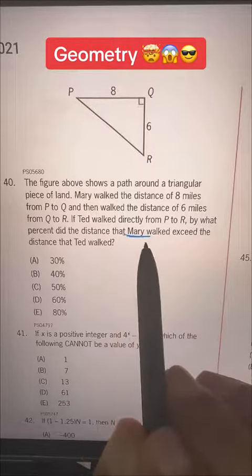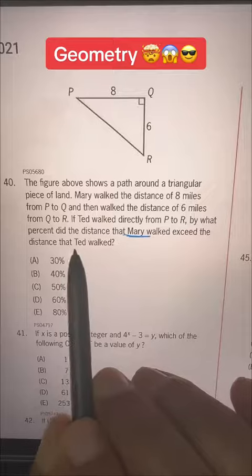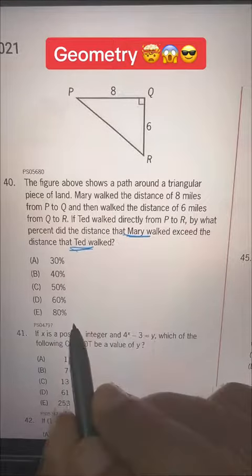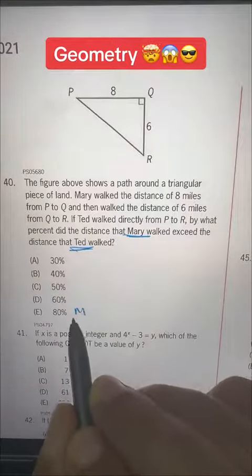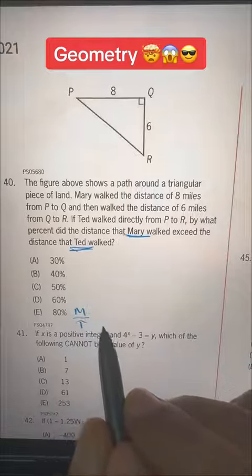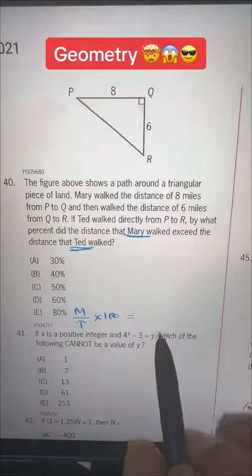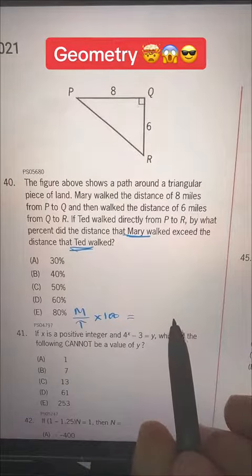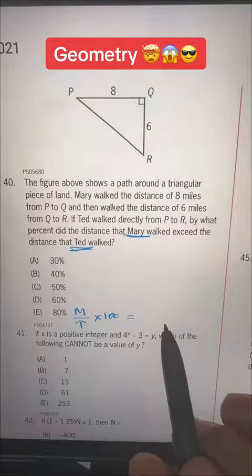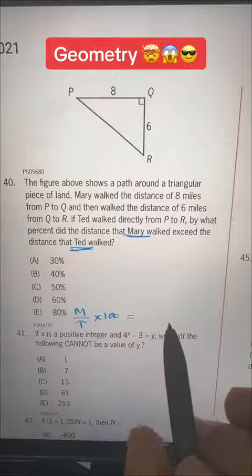So Mary's distance is what percent more than Ted's distance? You can do this by Mary's distance divided by Ted's distance multiplied by 100, and whatever your result is, if it is 110, it means 10% more. If it is 120, it means 20% more and so on.